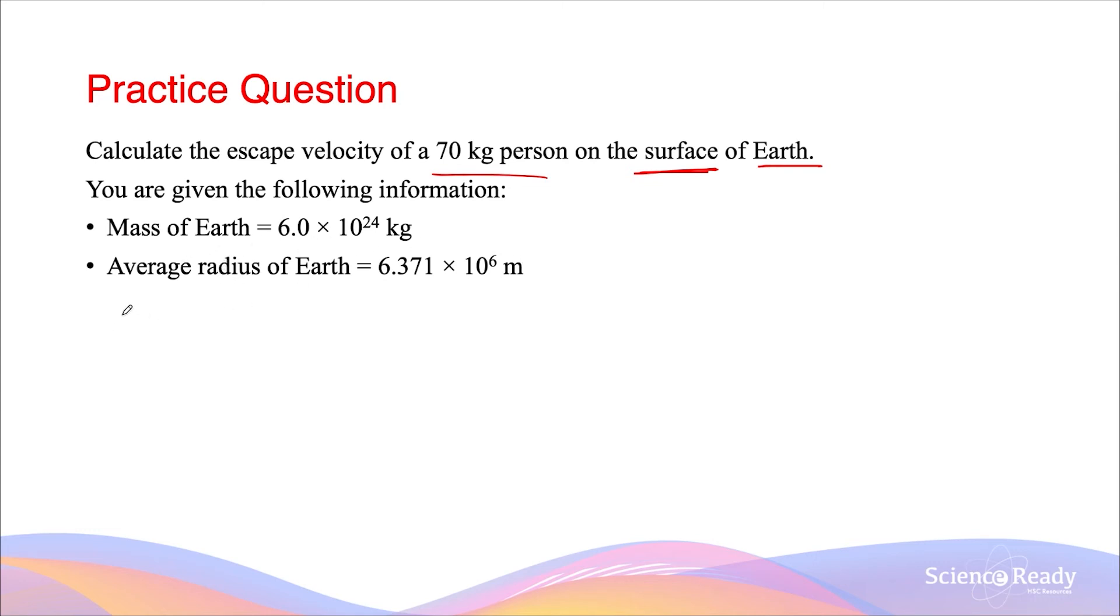Remember that to derive the expression for escape velocity, we need to use the conservation of energy. The kinetic energy and the potential energy at the initial point is equal to the final energy when it gets to infinity. E final at infinity equals zero. This is because both the kinetic energy and the gravitational potential energy are both zero when the object gets to the infinity point. So we have half mv squared minus GMm divided by r, and this is equal to zero.